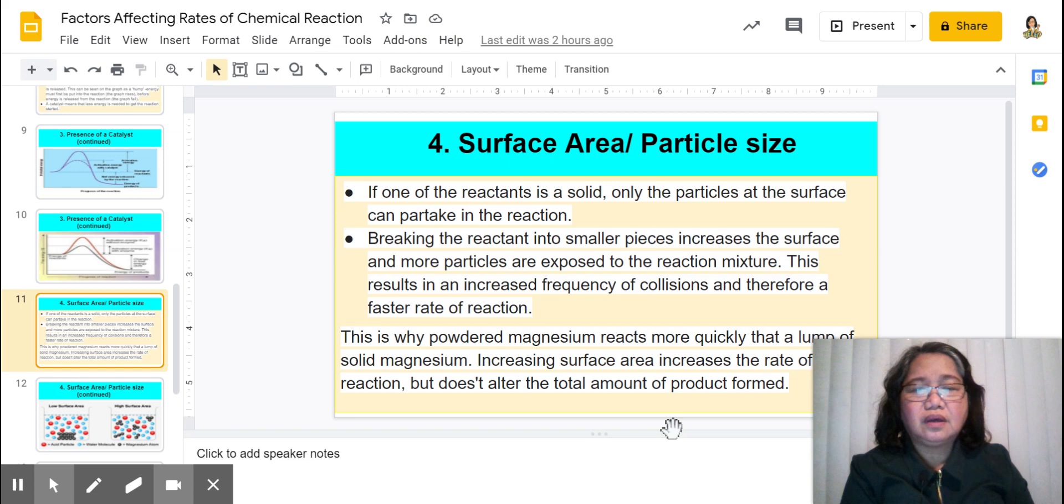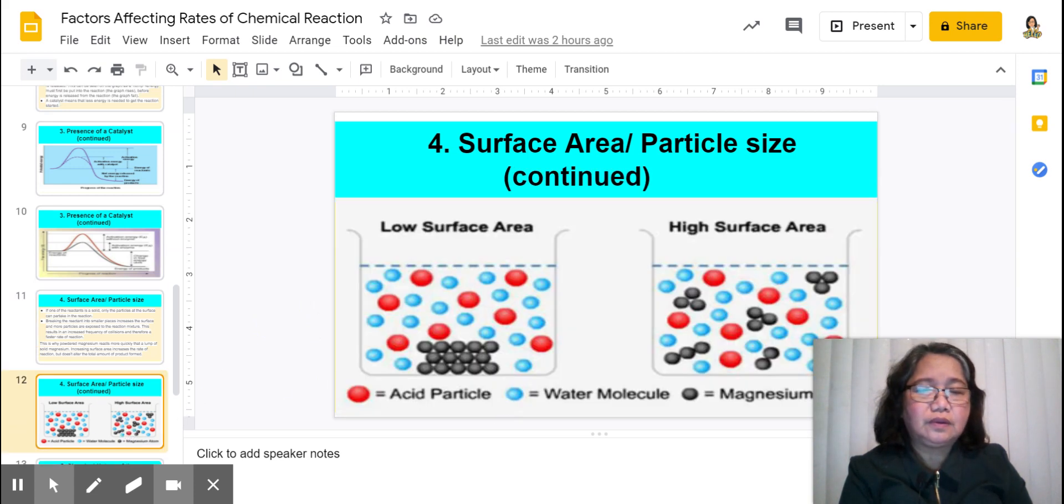So the fourth factor that affects the rate of the reaction is the surface area or the particle size. So take a look at this one right here, so you'll know what I mean about this. So you have low surface area compared to high surface area. Take a look at this: the particle is solid, now compared to the other one in which they are like ground or they are in pieces, making the surface area bigger.